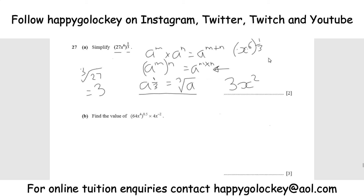Moving on to Part B: find the value of (64x⁴) to the power of a half, multiplied by 4x to the power of minus 2. Starting with 64 to the power of 0.5 — the power of a half means we take the normal square root. The square root of 64 is 8. For the x part, x to the power of 4 to the power of a half is x to the power of 4 times a half. 4 halves is 2, so the first part gives us 8x².